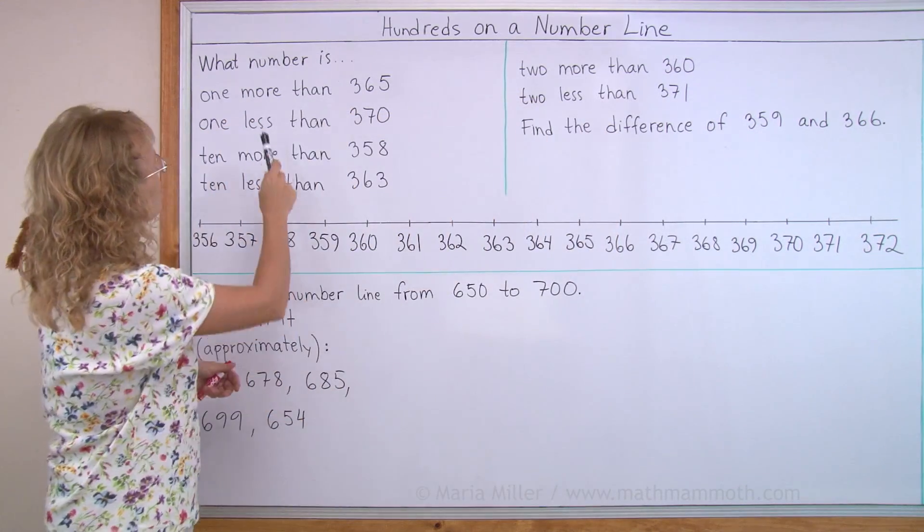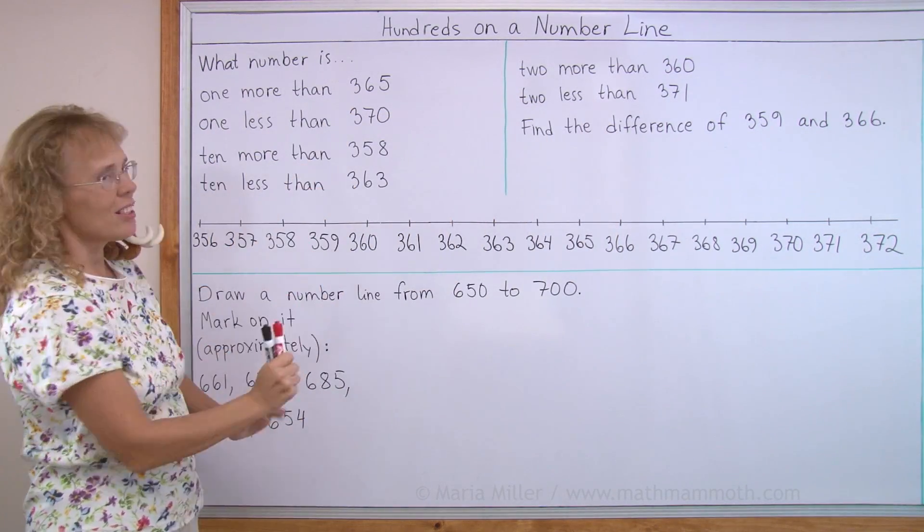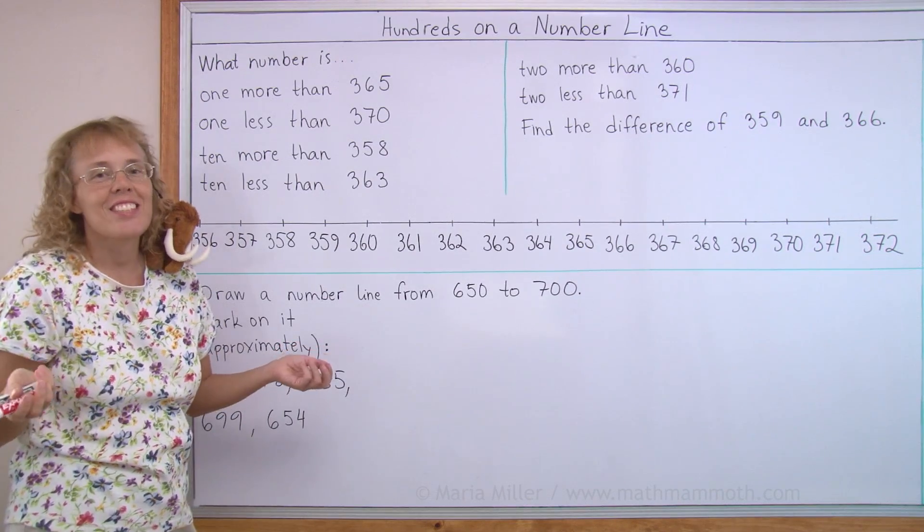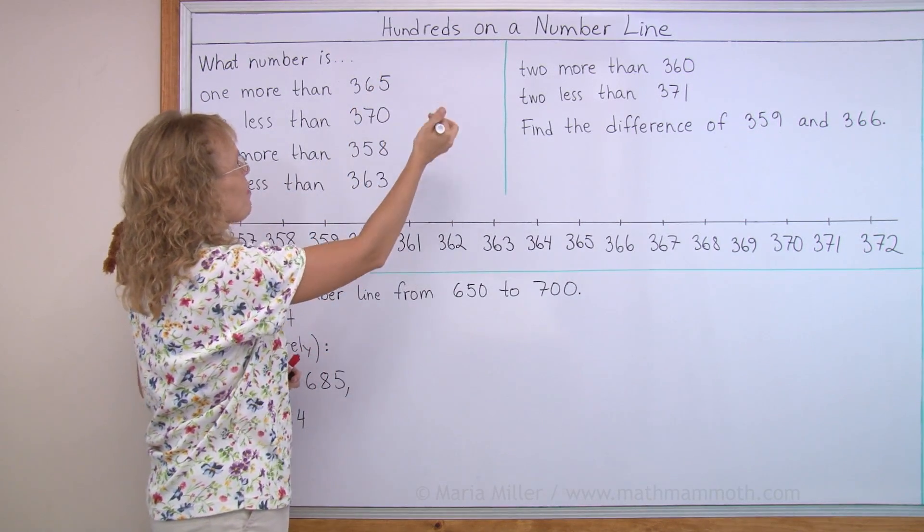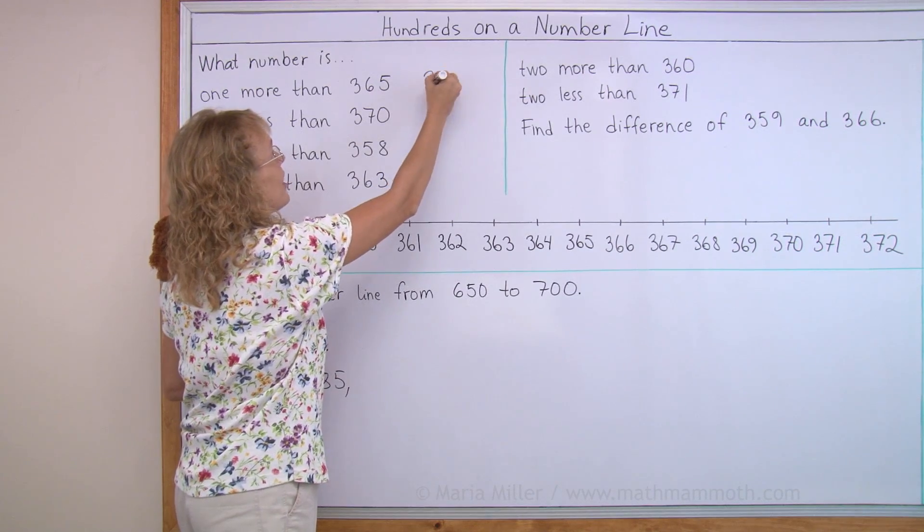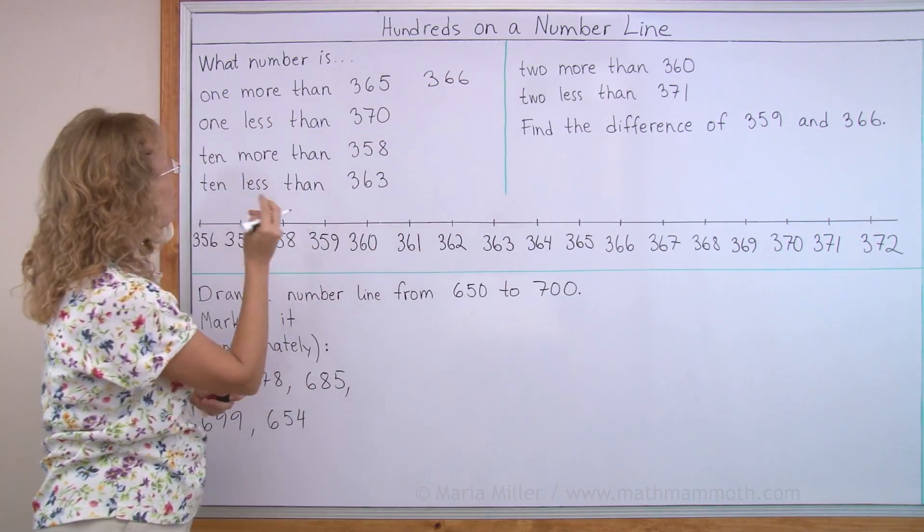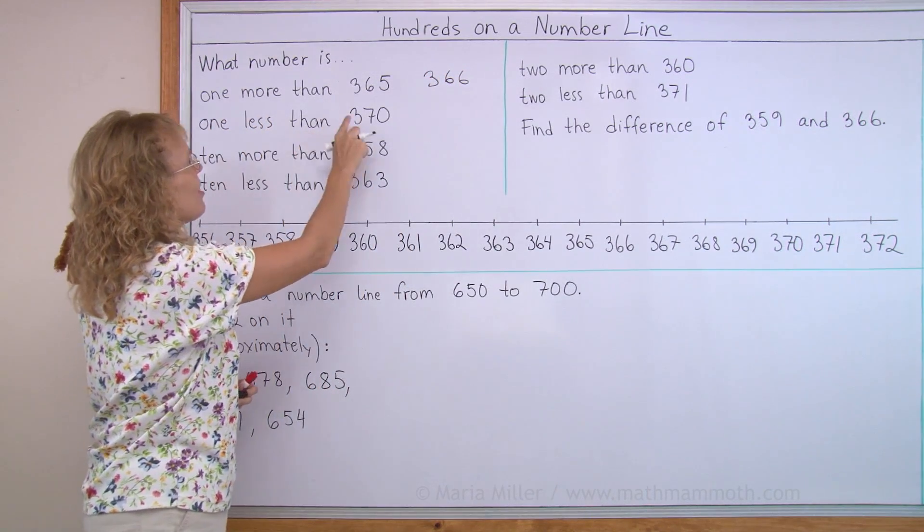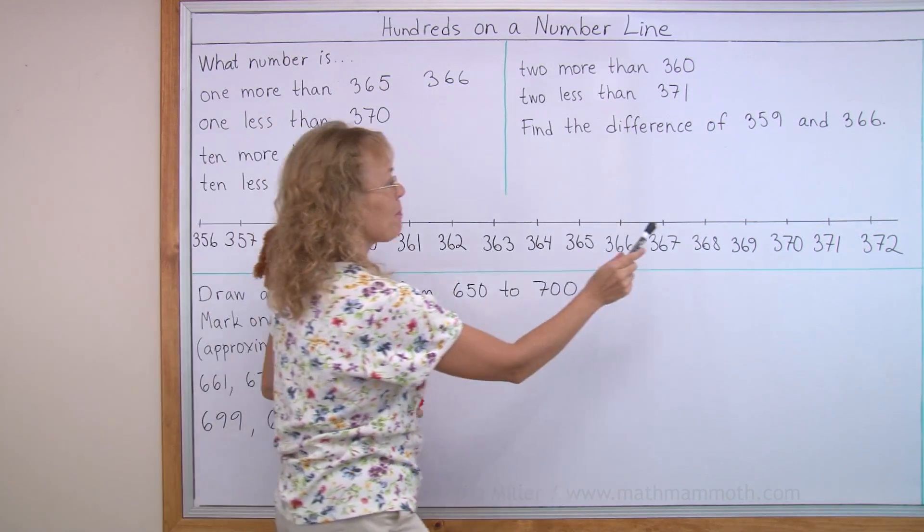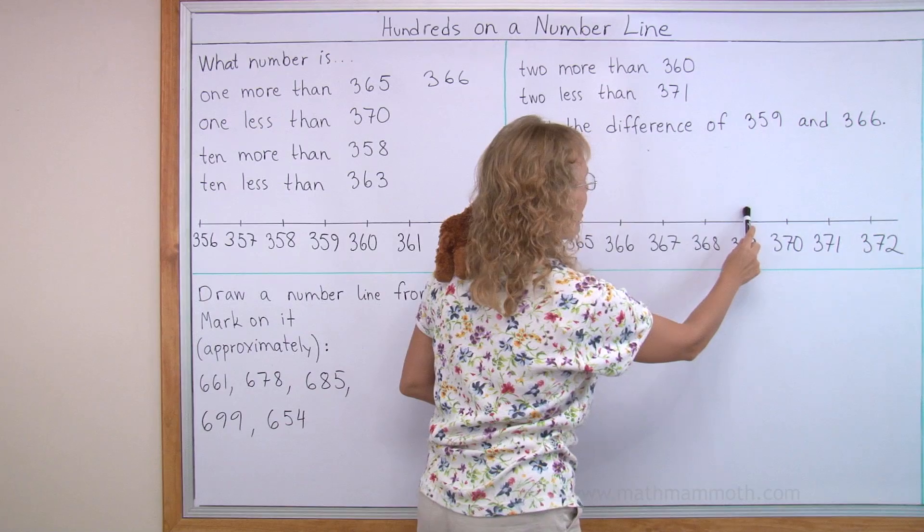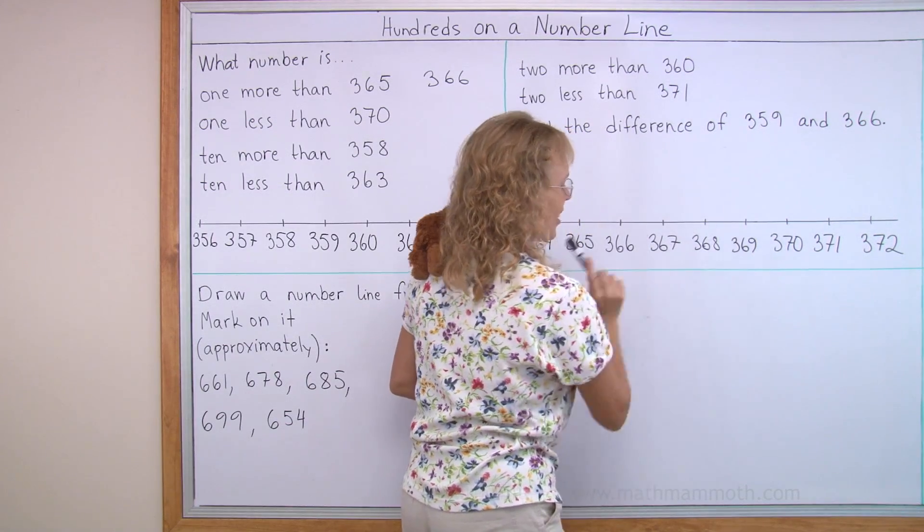Let's answer these questions here. What number is one more than 365? That's easy, right? Think of 65 and one more, so we get 66. 366. What number is one less than 370? You can find it on the number line, 370, go one less, 369.